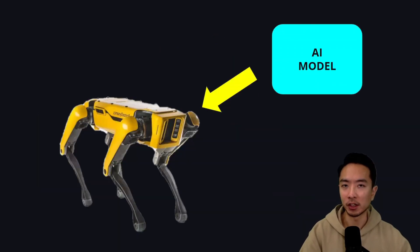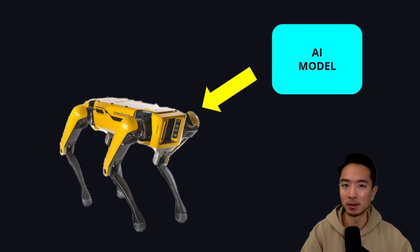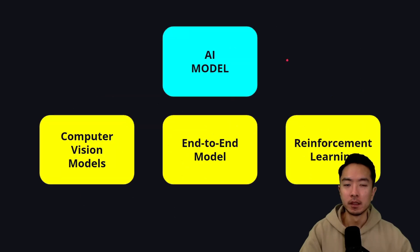Let's take a concrete example. Let's say we have the Spot robot from Boston Dynamics and we add some AI model — a perception or navigation model — that allows it to navigate the world autonomously. That system is what we can call a Physical AI system.